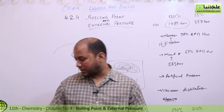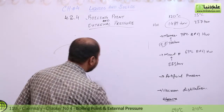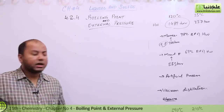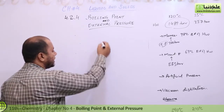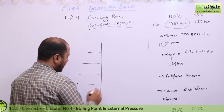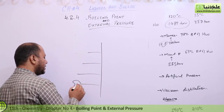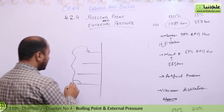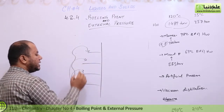Let me show you an example of vacuum distillation. In class 10 chemistry, you also learn fractional distillation. In fractional distillation, you get different chambers. Liquids with low boiling points vaporize very quickly.